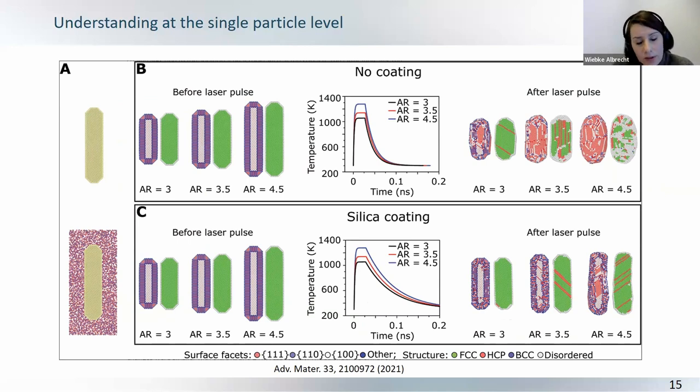But you can see that the heat dissipation is influenced by the silica coating. And this is because silica is a bit of a worse thermoconductor than the surrounding glycerol that we had otherwise, and so you basically delay the heat dissipation a bit more.